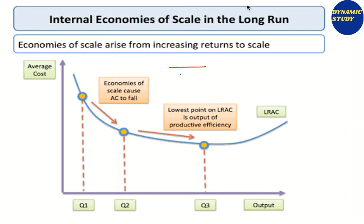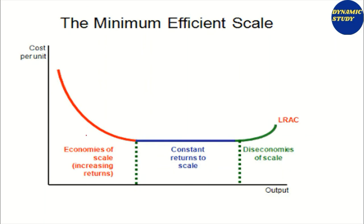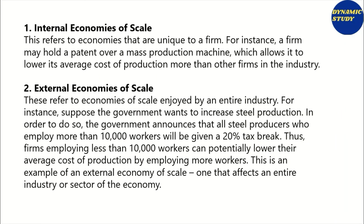Economies of scale basically arise from increasing returns to scale. We know that increasing returns to scale means output increases more than the rate at which we increased the amount of inputs — that is, labor and capital. The average cost curve falls, and when we reach the lowest point of the long-run average cost curve, it is the output of productive efficiency. Economies of scale occur when we increase production and cost is declining. Internal economies of scale refer to economies that are unique to a firm — for instance, a firm may hold a patent over a mass production machine, which allows it to lower its average cost of production more than other firms in the industry.